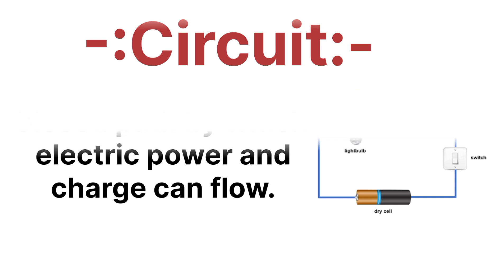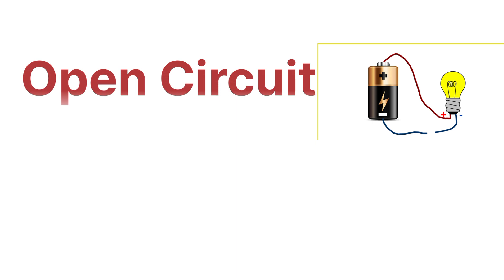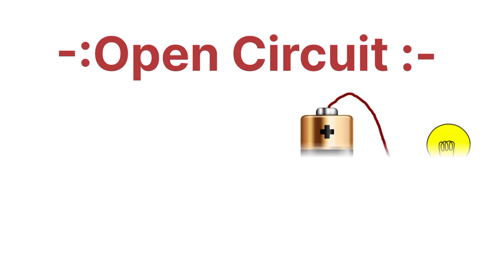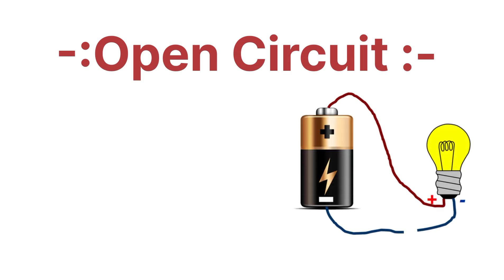There are two types of circuits available: the first one is the open circuit, and the second one is the closed circuit. Let's first see what an open circuit is.